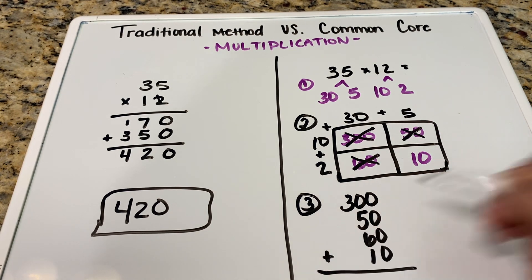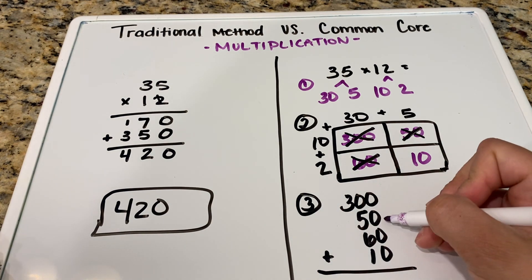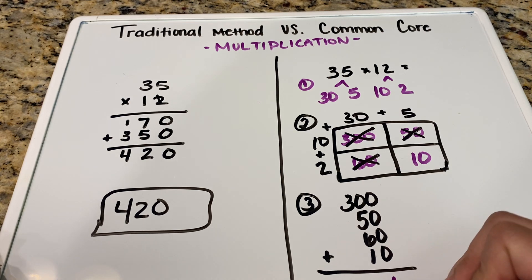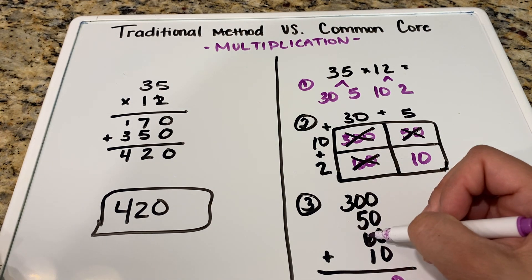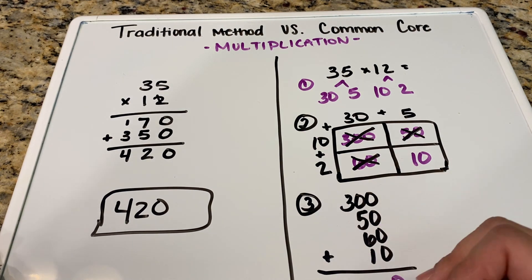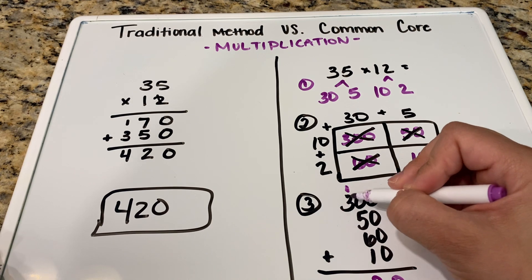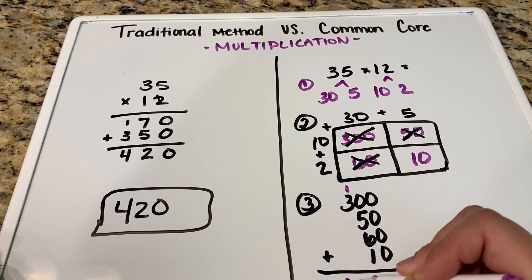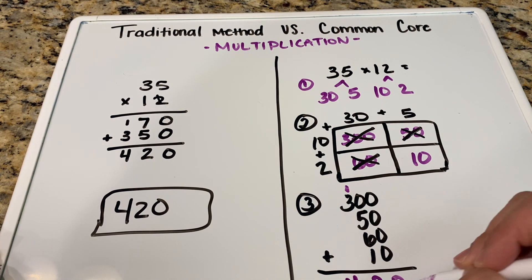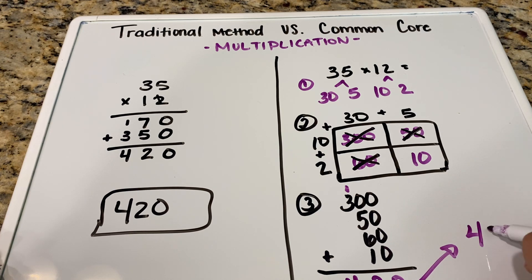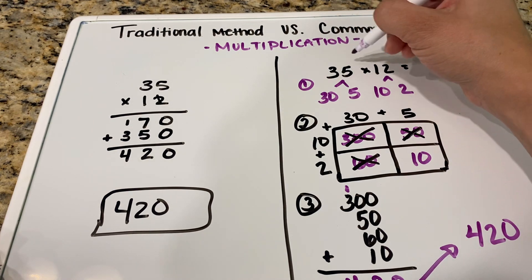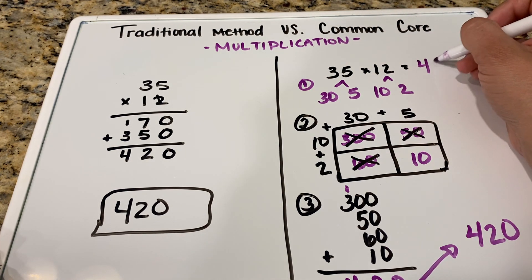All right. And like I said, we're going to go ahead and add this. So we're going to start all the way in the ones column. So 0 plus 0 plus 0 plus 0 is 0. 5 plus 6 plus 1 is 12. It's a number above 9. So we're going to put the 2 down below. We're going to carry the 1. 3 plus 1 is 4. So our answer, 420. We can put it up here. 35 times 12 is 420.